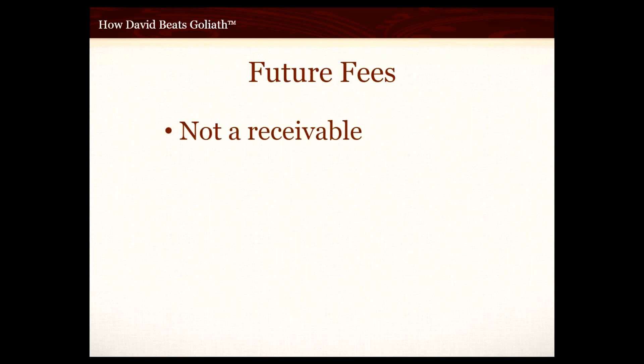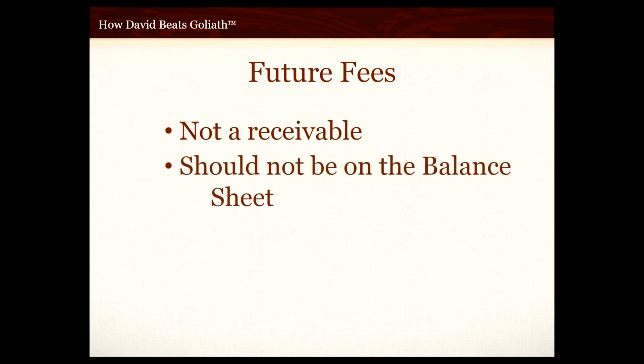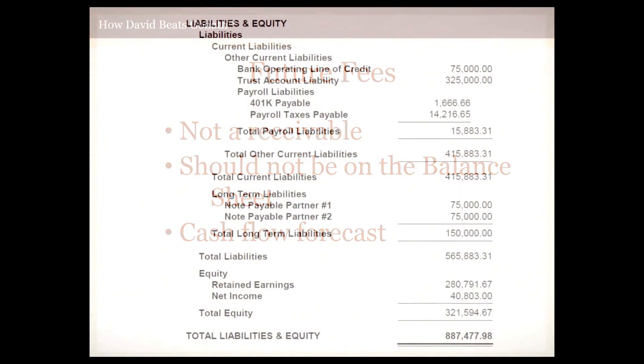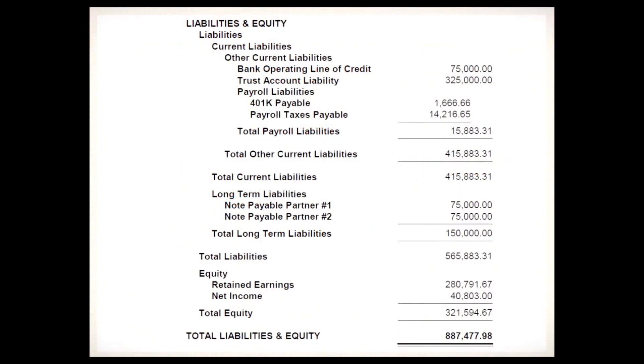One thing you do not see on the balance sheet — and should not see — are future fees. The future fees that may be earned on contingent fee contracts are not receivables because the fees have not been earned yet, so they should not be on the balance sheet. They may appear on your cash flow forecast; if you don't do a cash flow forecast, stay tuned because I'll do a separate video on that as well.